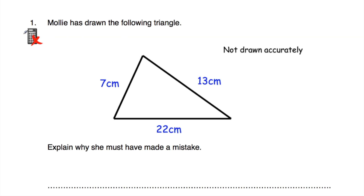Let's have a look at question number one. Question number one says Molly has drawn a triangle and labelled the sides 7cm, 13cm, and 22cm. The question says explain why she must have made a mistake.